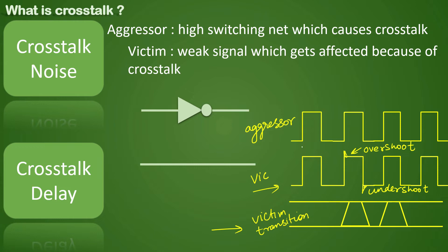Noise can also occur when a victim is at a constant value. When it is at a constant high, there can be a droop in the signal; if it is at a constant low, there can be a bump in the voltage. If this droop or bump crosses the noise margin levels — represented by NM Low or Noise Margin High — then zero could be represented as one, or one as zero.